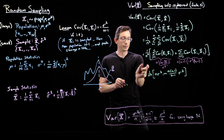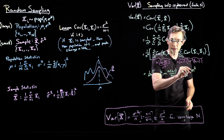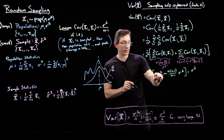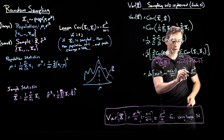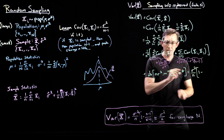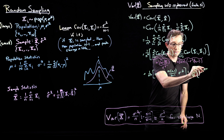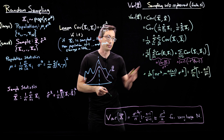I can pop σ² out, and each term has a little n, so I can factor that out too. I get σ²/n times [1 − (n−1)/(N−1)]. And that is my correction factor — the finite population size correction.